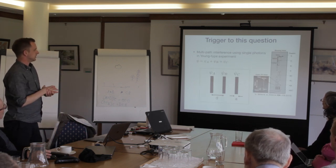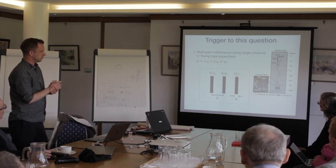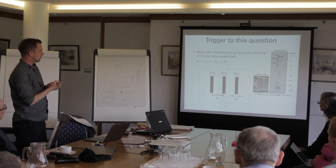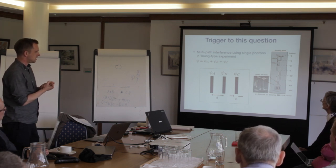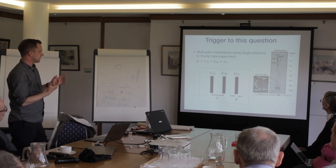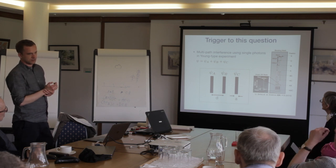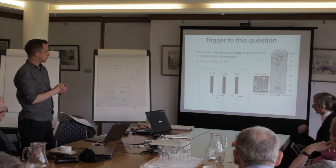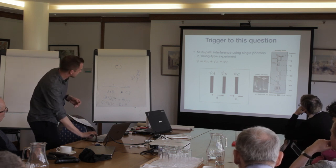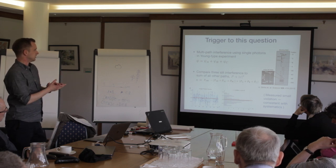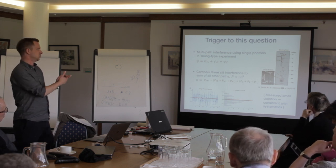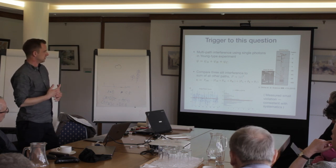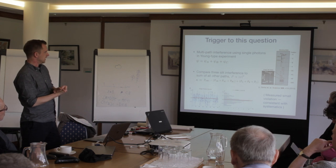This was the original paper that triggered me to start thinking about these things. A group in Waterloo was motivated by this Sorkin parameter to measure it easily. They set up a multi-path interferometer — just three slits labeled A, B, and C, each with opening width little-a, separated by distance d. This is effectively a three-slit version of Young's experiment. They had a mask they would move in front of the slits to compare whether the probability when all three slits are open is consistent with the sum of all different paths. This kappa — the Sorkin parameter — according to conventional quantum mechanics is always zero.